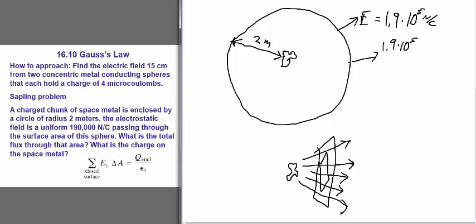Or we could say if we wanted to increase the flux, we could increase the charge on this charged metal space chunk. And those field lines would get closer together and you'd have more field going through the area and therefore more flux.